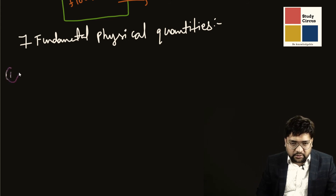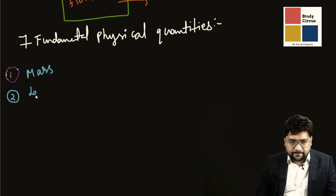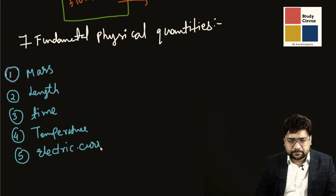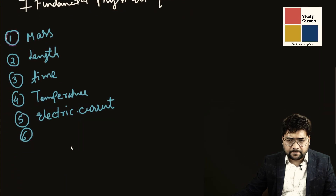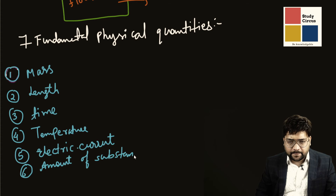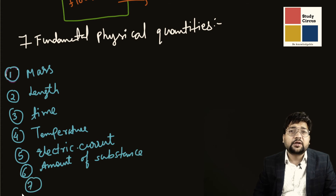The seven fundamental physical quantities are: first, mass; second, length; third, time; fourth, temperature; fifth, electric current; sixth, amount of substance; and the seventh and last one is luminous intensity.